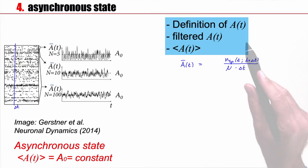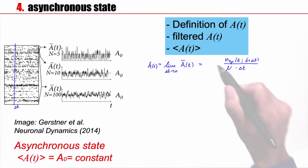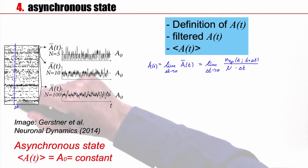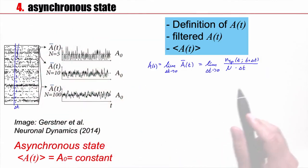Now, the momentary activity is this limit where I take Δt to 0. This basically means I have a super short time window and in this super short time window, I just count the spikes across the neurons and I still divide by n.